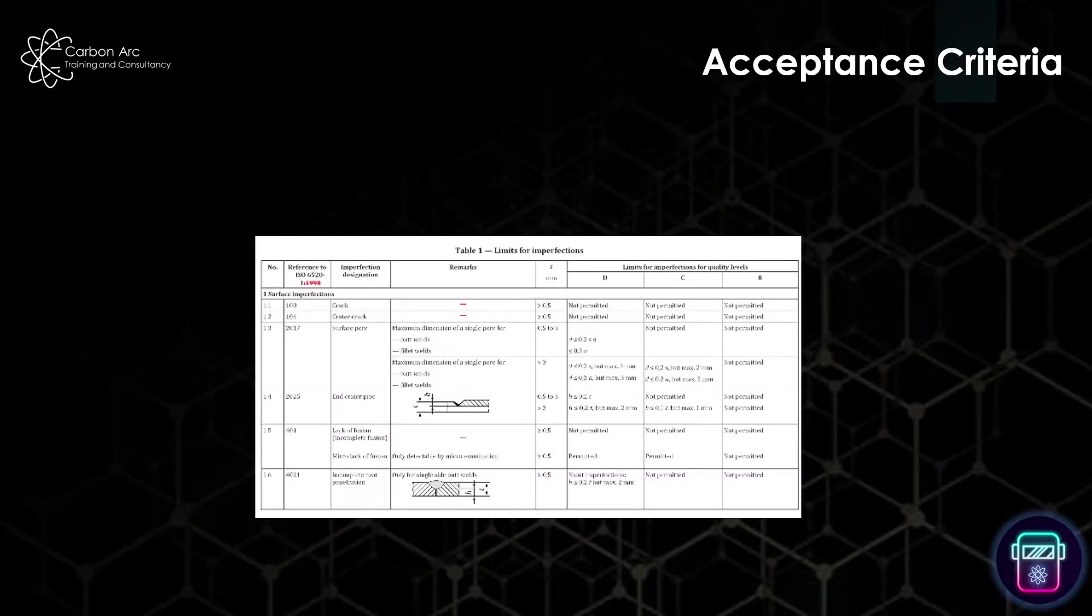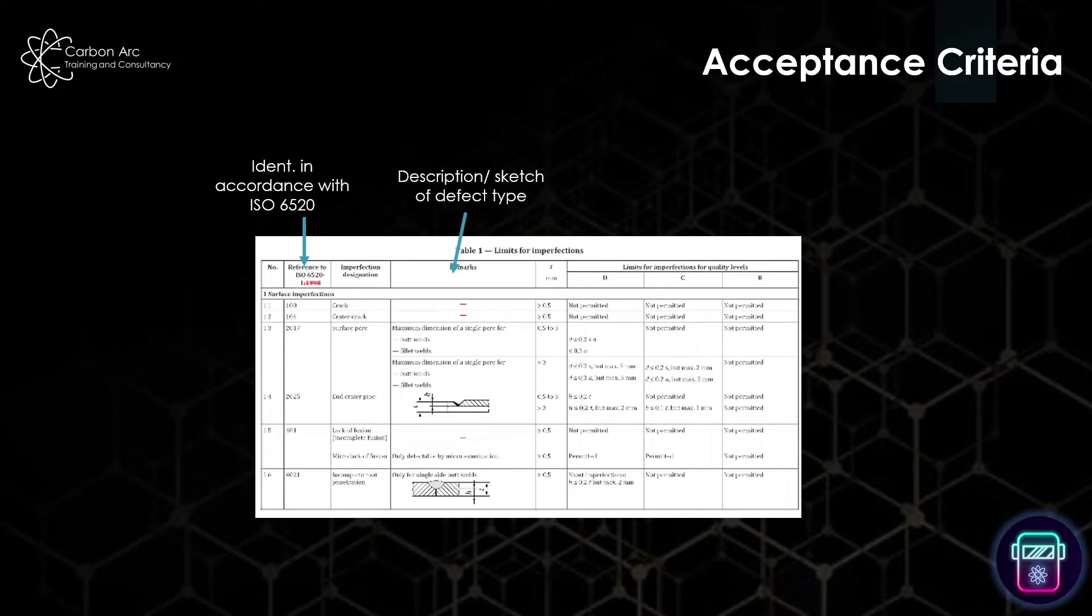As a brief look at an acceptance criteria, here is a cut out from 5817. You can see along that you have identification in accordance with ISO 6520, so this gives every defect an individual serial number. You get a description and a sketch of each of the defect types. Sometimes this is a sketch, sometimes it's just a bit of wording. The sketches do help you identify what type of defect you're looking at.